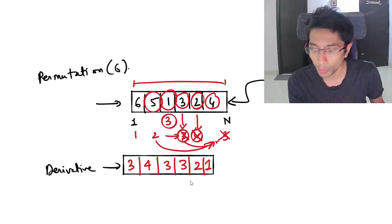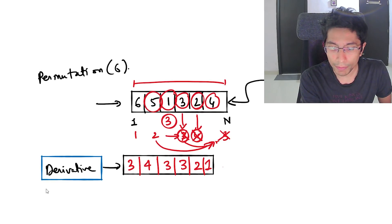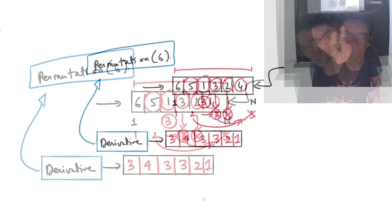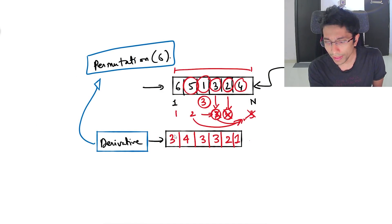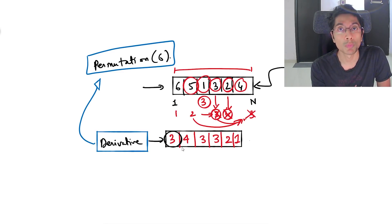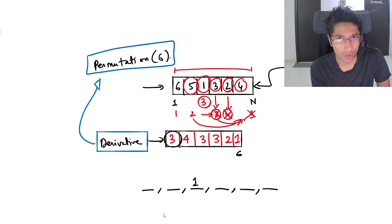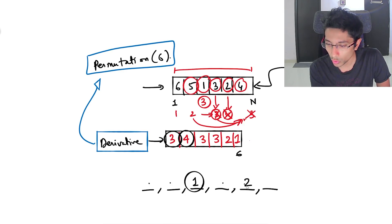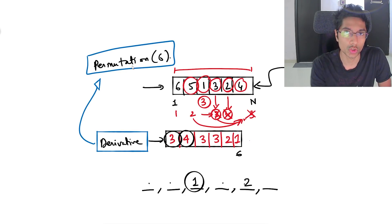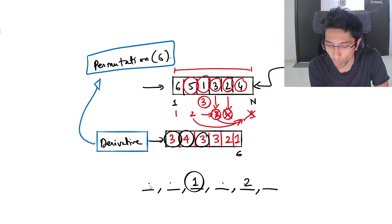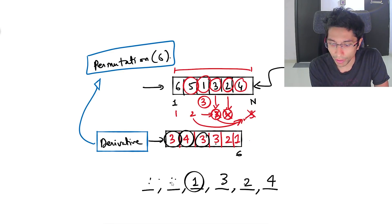Our job is to take this derivative array and reconstruct the original permutation. Let's try to do this manually. We see element 3 at the starting position — this is the smallest element. We need 6 blank spaces since it's a 6-element array. The position is 3, so 1 is placed at index 3. Then 4 comes next; skipping this element we count 1, 2, 3, 4, so 2 goes here. Then 3 again: counting 1, 2, 3 places 3 there, and then 4 here.